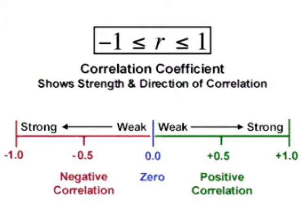If the correlation coefficient is close to 1, it means that the two assets are strongly correlated. If the value of one asset increases, then there is a strong likelihood that the value of the other asset will increase as well. If the coefficient is close to negative 1, it means that the two assets have a strong negative correlation — if the value of one asset increases, there is a strong likelihood that the value of the other asset will decrease.